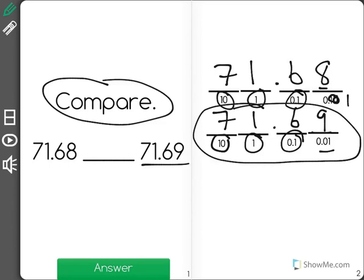Now as you can see, that is 71.69, meaning that 71.68 is less than 71.69.